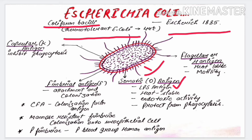The somatic O-antigen is also called the lipopolysaccharide antigen, as it contains lipopolysaccharide. It is heat stable and shows endotoxic activity. This somatic O-antigen protects the bacteria from phagocytosis and from the bactericidal effect given by the complement system of the host.